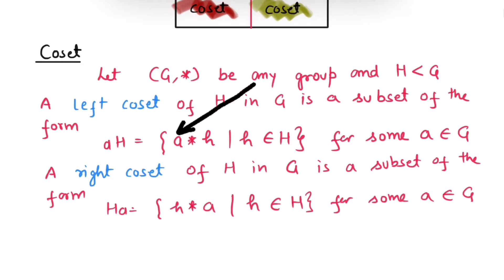In left coset, A is operated from the left with each element of H, and in right coset, A is operated from the right with each element of H.